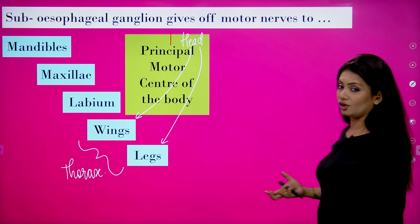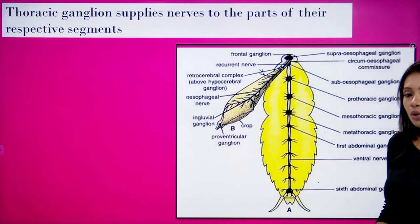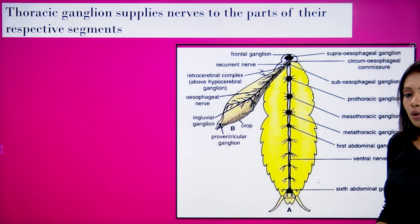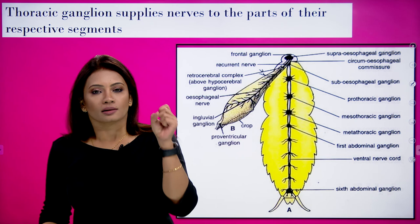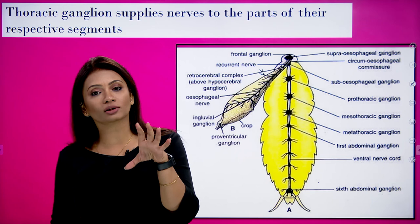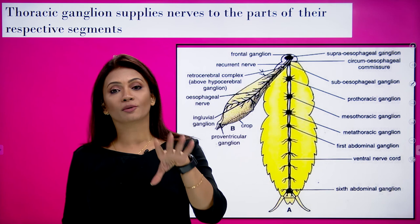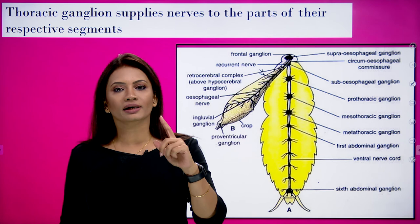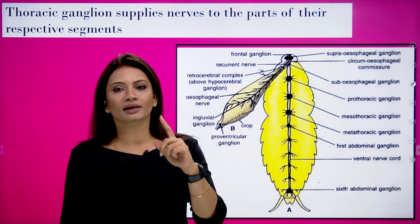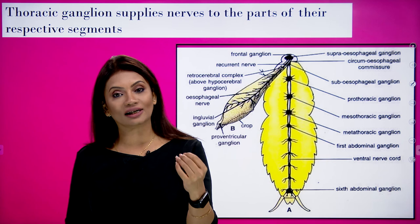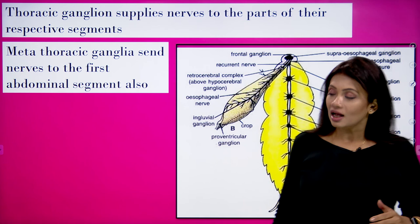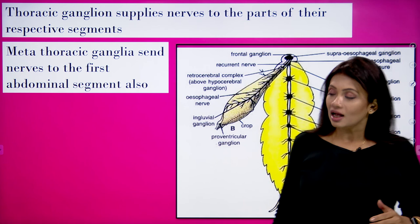The principal motor center of the body is the sub-esophageal ganglion. When we talk about the thoracic ganglia — there are three ganglia in the thorax, one in each segment. Even the sub-esophageal ganglion (in the head) also supplies the wings and legs. Now, when we talk about the metathoracic ganglia, that is not only going to take care of its own third thoracic segment.